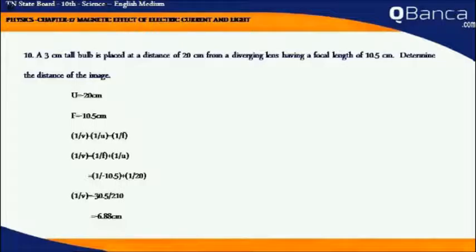Determine the distance of the image. U equals minus 20 cm, F equals minus 10.5 cm. 1 by V minus 1 by U equals 1 by F.